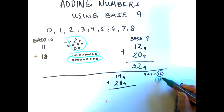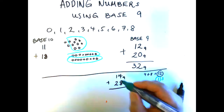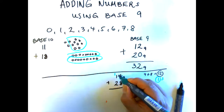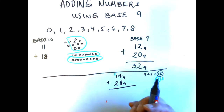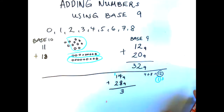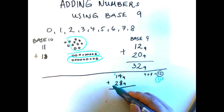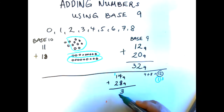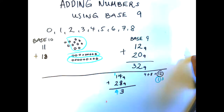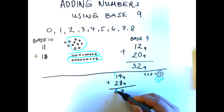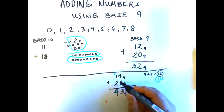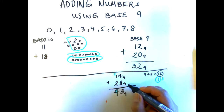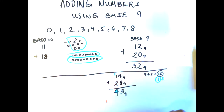So 4 plus 8 gives 1 group of 9 with 3 outside. Write down 3 and carry 1. Then add the nines column: 1 carried plus 1 plus 2 equals 4 groups of 9. So the answer is 43 in base 9. To confirm: 14 and 28 in base 9 equals 43 in base 9.